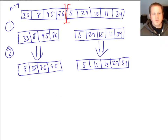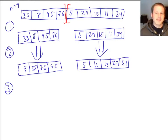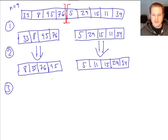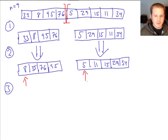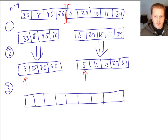So we split up the input, we did our recursion, and now step three is to combine these. This step three is the tricky step for merge sort — for some algorithms like binary search it's easy, but for merge sort this is where the big task comes in. This is where the merge algorithm itself comes into play. The way merge works is we imagine having a pointer, an arrow, into each of these arrays. Then we make one big array for the output.